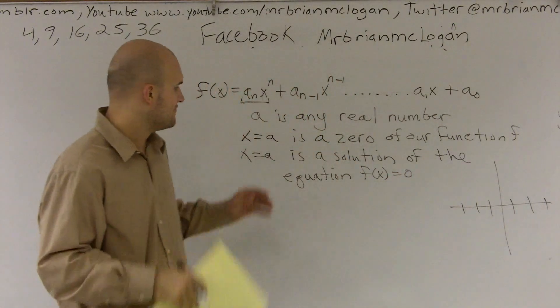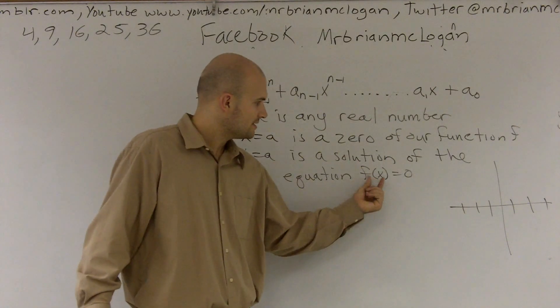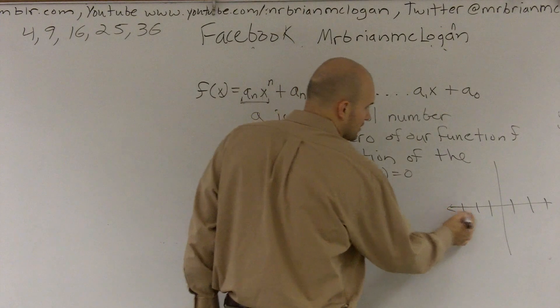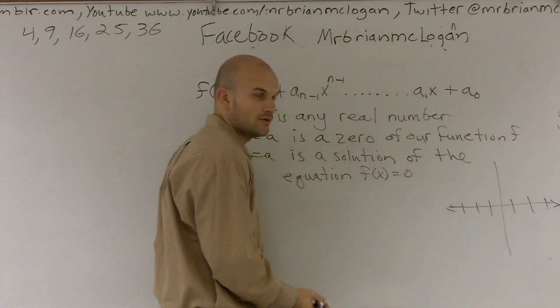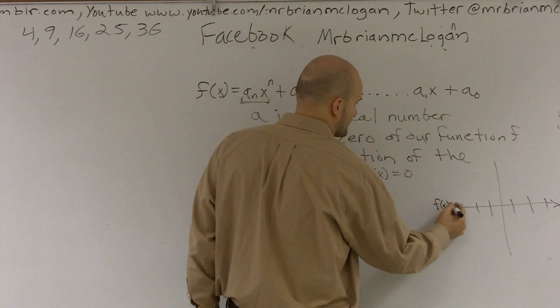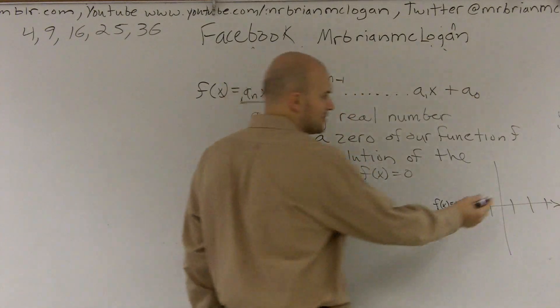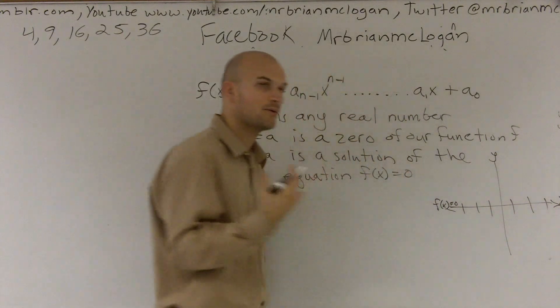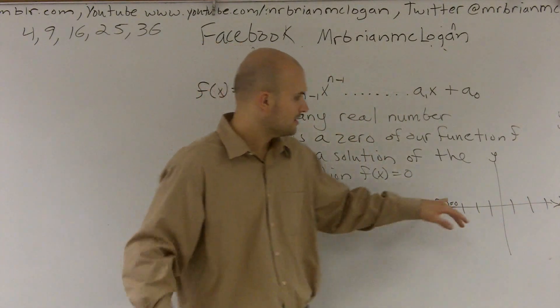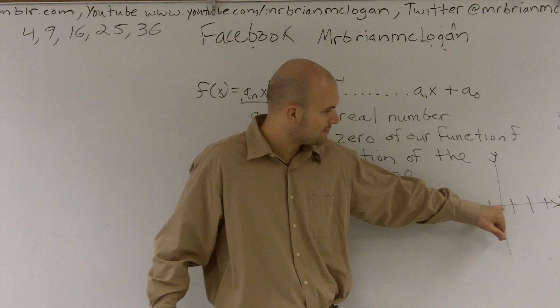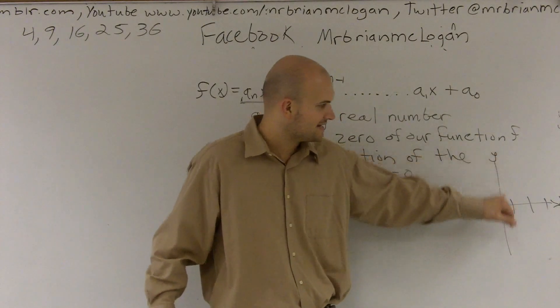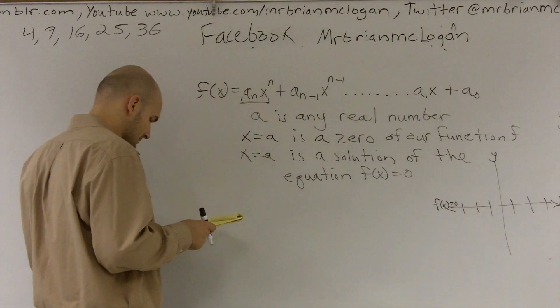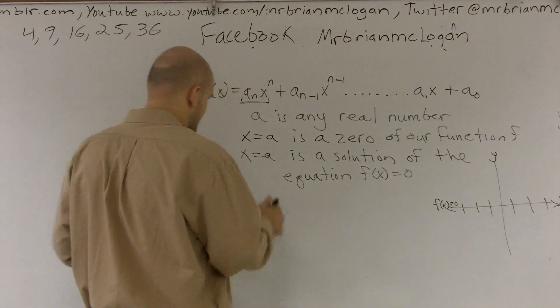The next thing is we need to know is x equals a is a solution of the equation when f of x equals zero. So, what that's saying is the values of x and a make f of x equal to zero. Well, where is f of x equal to zero? Well, ladies and gentlemen, f of x is equal to zero on the x axis. Right? Because remember, here's your y axis, here's your x axis. Well, remember, when we're talking about functions, we're talking about an input and an output. So, if you're putting something on the x but you're not getting anything out on this y, it's equal to zero.